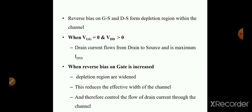Let us explain in detail the operation of N-channel JFET. Reverse bias on gate-source and drain-source forms the depletion region within the channel. When reverse bias on gate-source terminal equals zero — that means VGG equal to 0 and VDD greater than 0 — a voltage is applied across the drain-source terminal, and drain current flows from drain to source. At this stage, maximum current flows and this maximum drain current is represented by the letter IDSS, which means drain-to-source current at saturation.